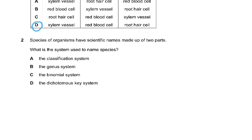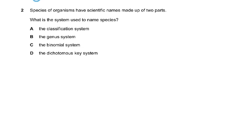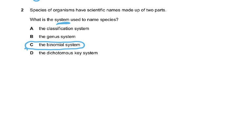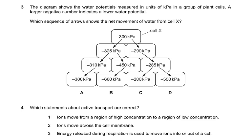Coming to question 2: a species' scientific name is made up of two parts. What is the system used to name species? The answer is the binomial system — that's part of the syllabus. The genus system is wrong, the classification system doesn't exist as such, and the dichotomous key is used in a different context.